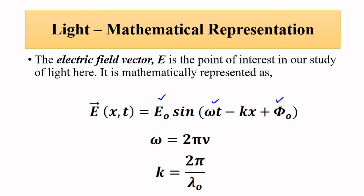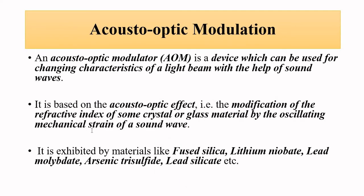Here we are basically interested in changing any of these parameters. In this method we will be changing the phase of the light vector with the help of a change in refractive index. The acousto-optic modulation method basically involves the use of sound waves to change the refractive index of the material through which light is passed.